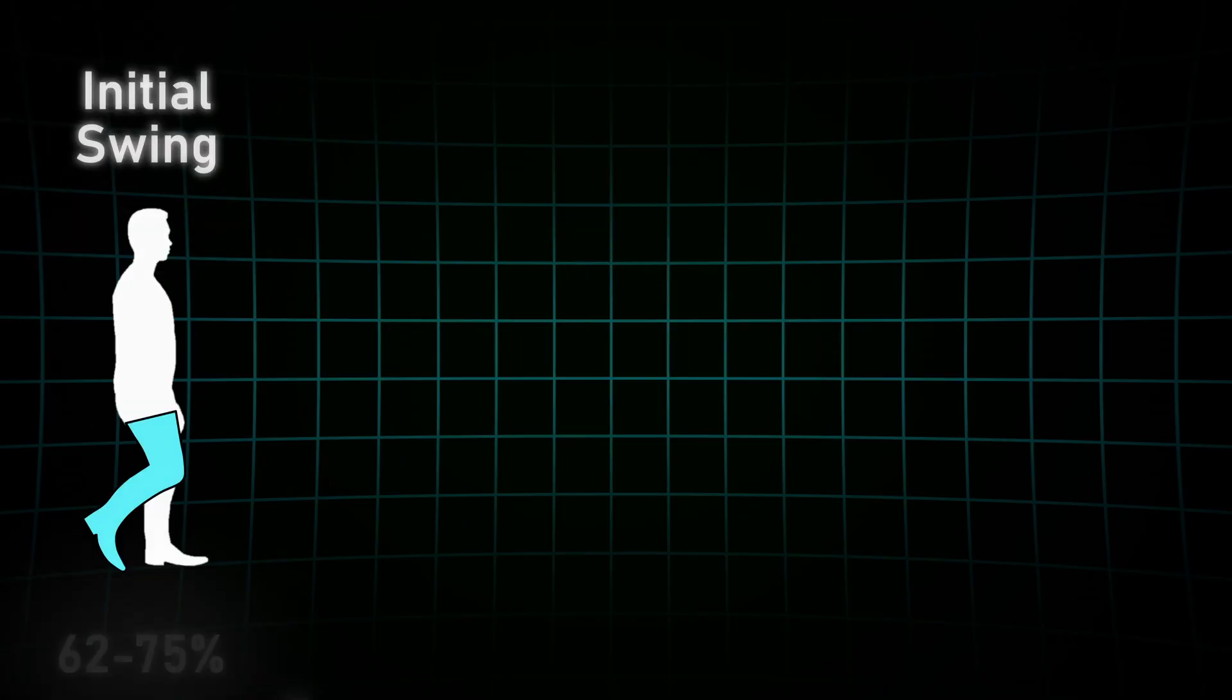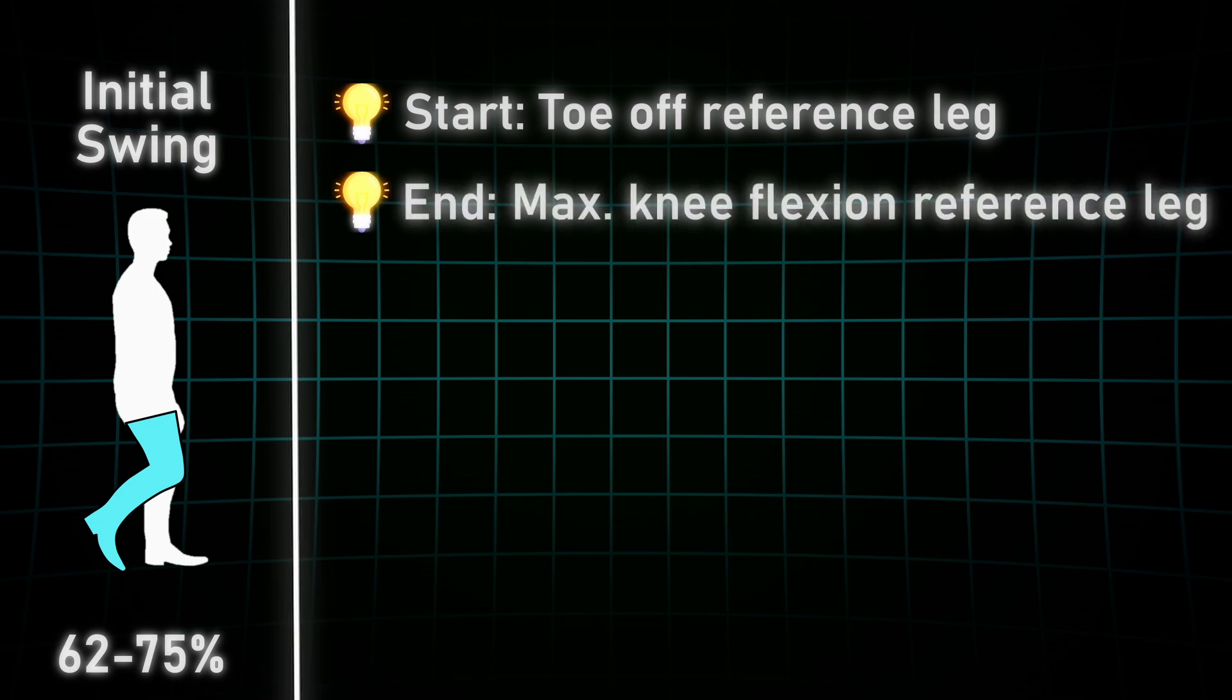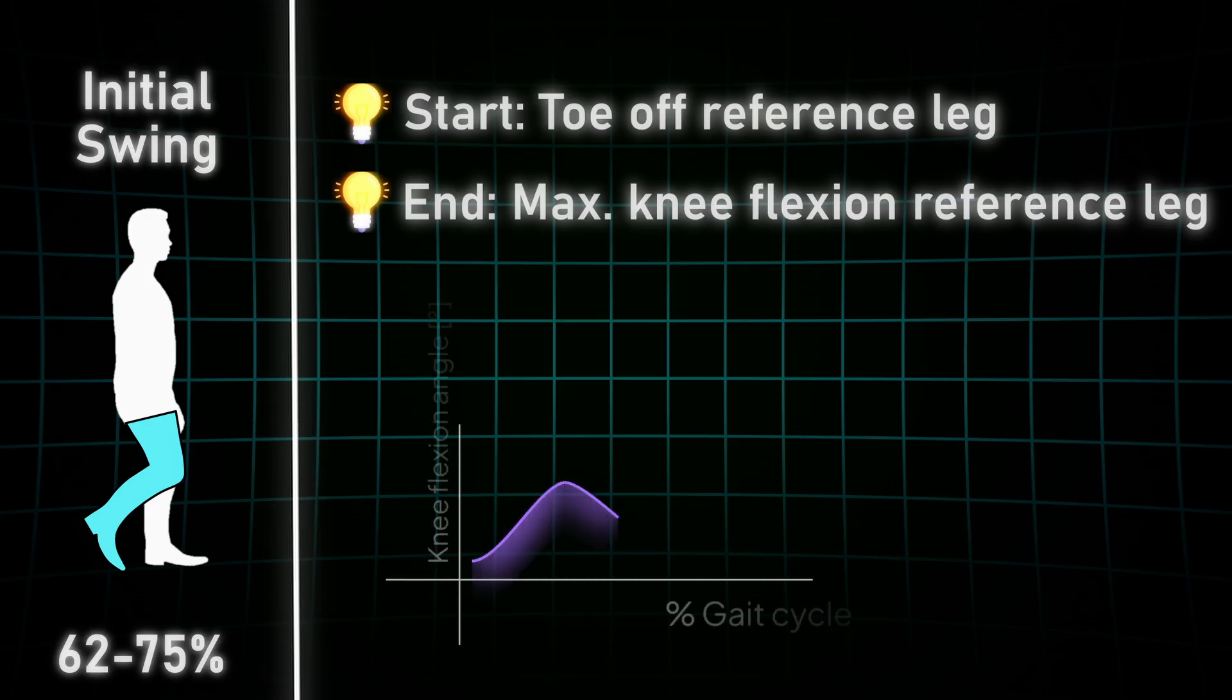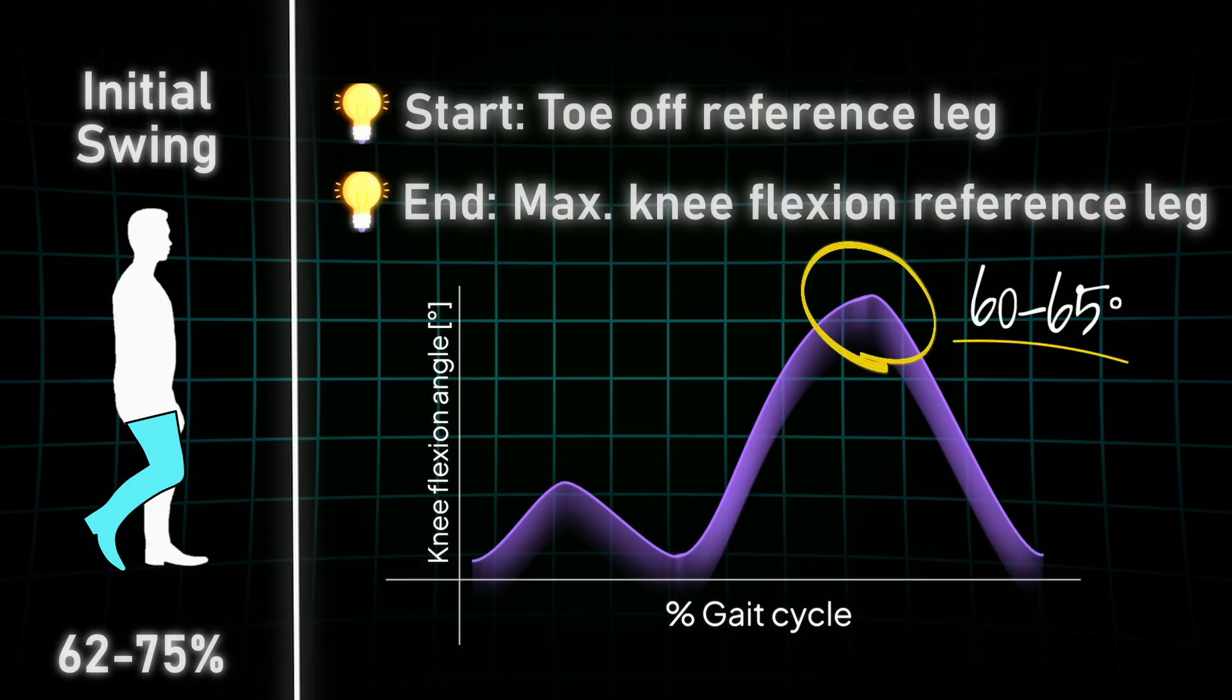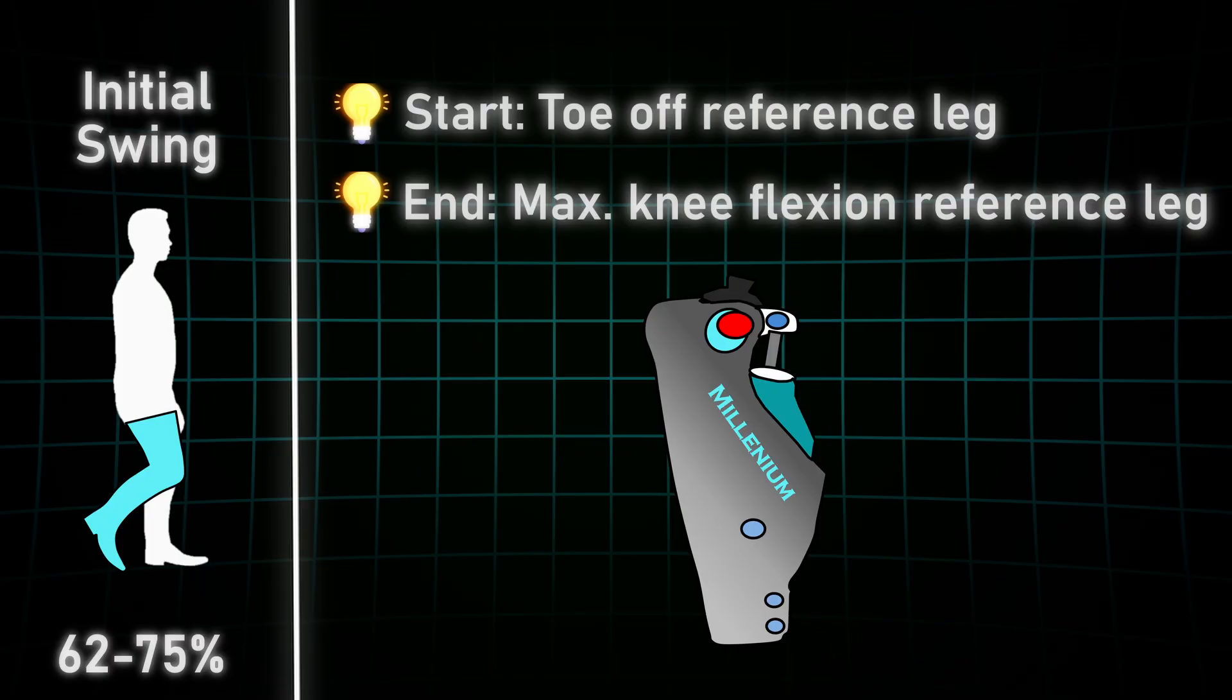The initial swing phase. It starts when the toes of the reference leg are leaving the ground and it ends at maximum knee flexion of the reference leg. The hip and knee are flexing now, enabling the leg to swing through. The maximum knee flexion angle is roughly 60 to 65 degrees and it's largely speed independent. Good prosthetic MPK knees are trying to hit this 60 degrees as best as they can.